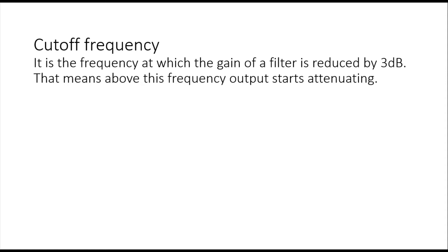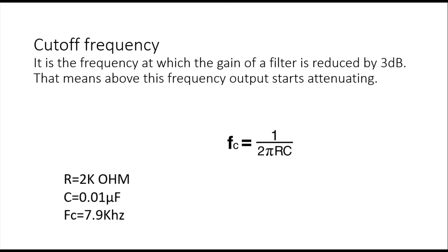Cutoff frequency is the frequency at which the gain of the filter is reduced by 3dB. That means above this frequency the output starts attenuating. The formula is fc = 1 / (2πRC). With R equals 2k ohm and C equals 0.01 microfarad, by calculating we get fc equal to 7.9 kHz. Above this frequency all the frequencies are attenuated.